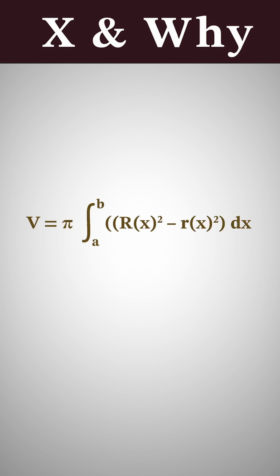For the washer method, the formulas are as follows. For a function with a horizontal axis of revolution, the formula is: volume equals pi times the integral from a to b of the outer radius of x squared minus the inner radius of x squared, dx.